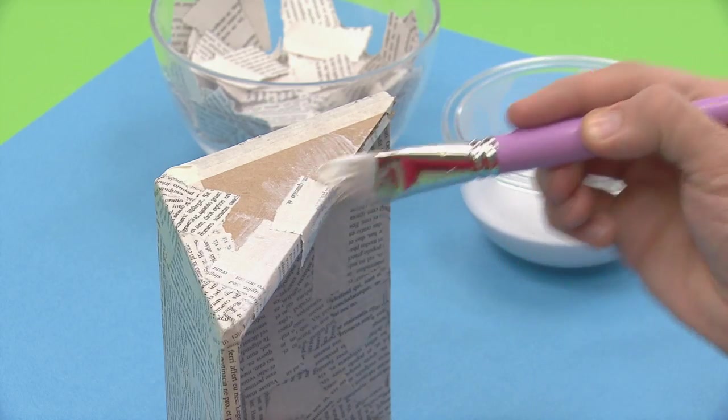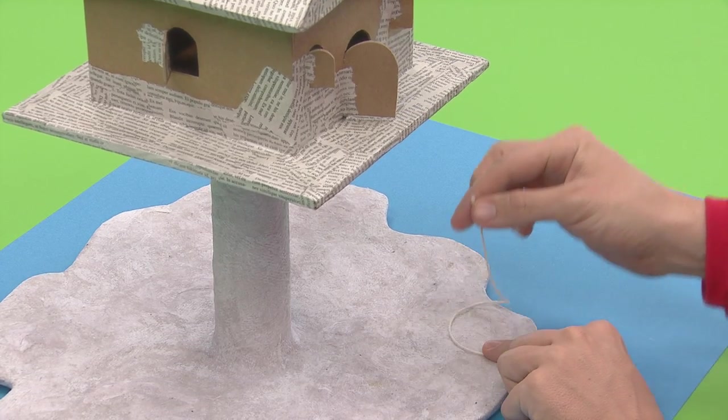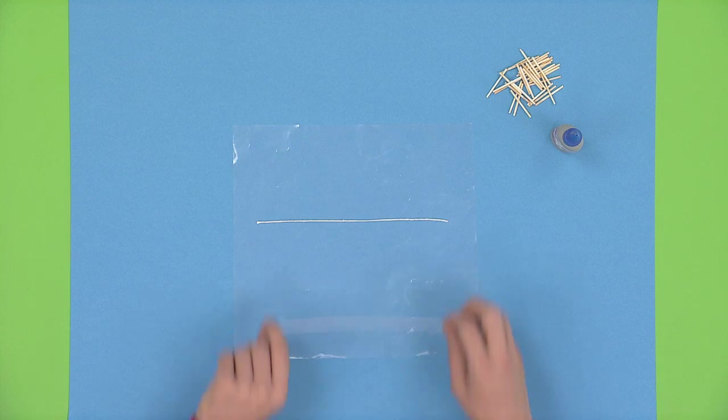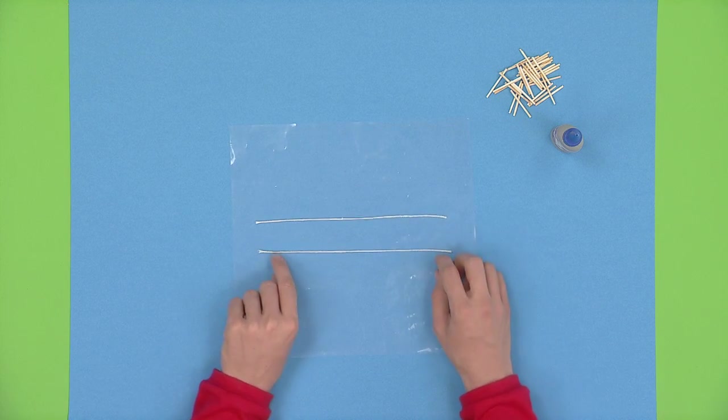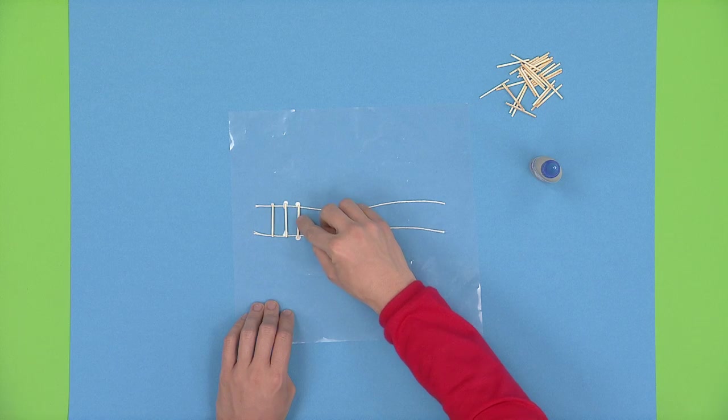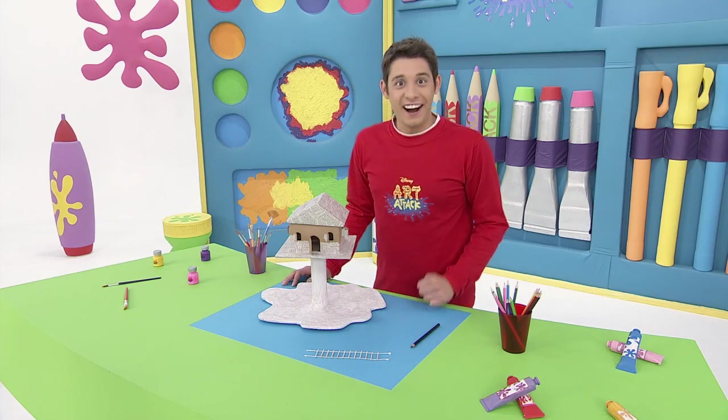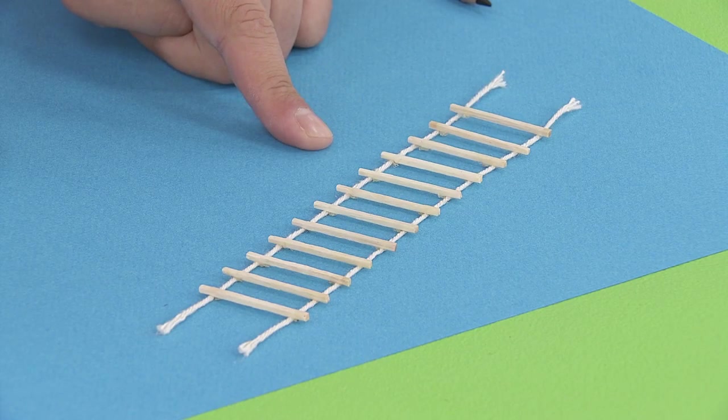To make the rope ladder, cut two pieces of string that reach from the house to the grass. Spread a piece of plastic and place the strings onto it side by side. Glue toothpicks on them one by one. We're getting there little by little. Wow, even though it's a bit small for my feet, I love this ladder!